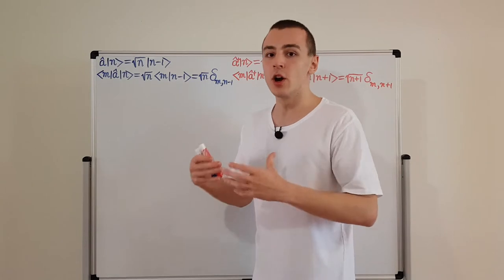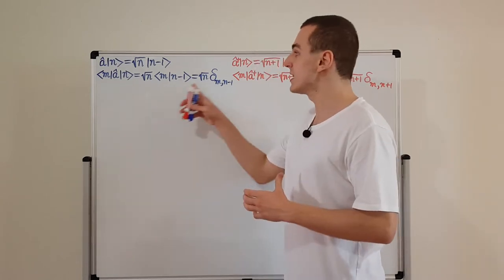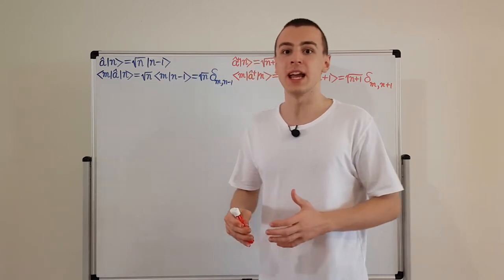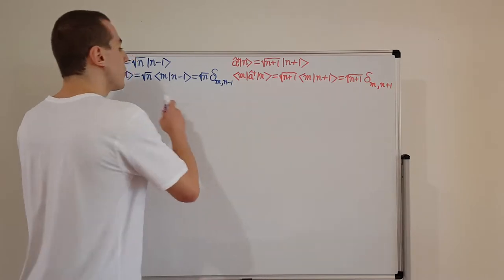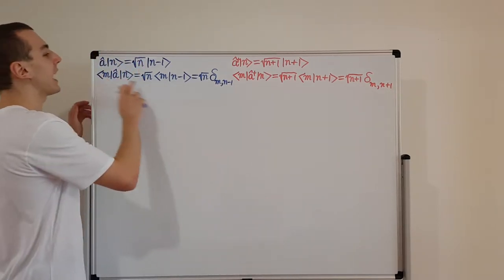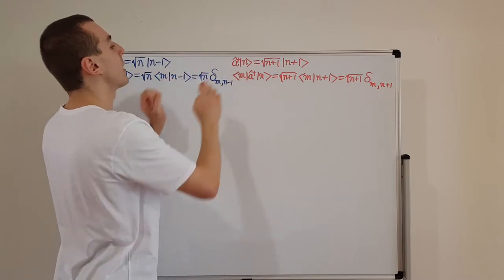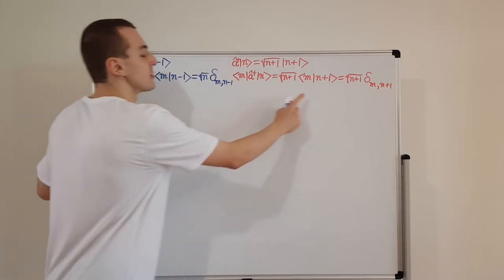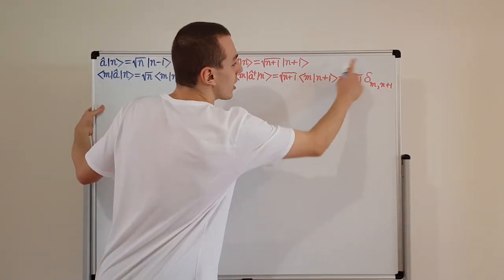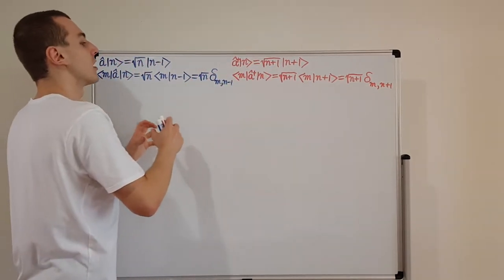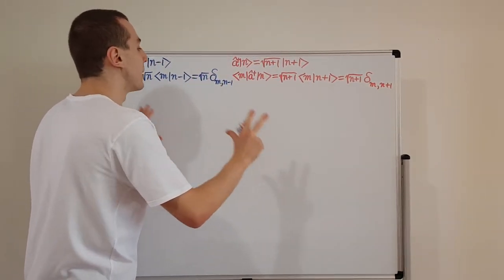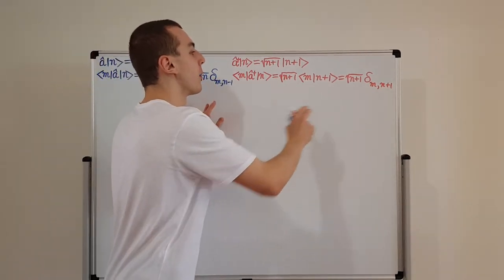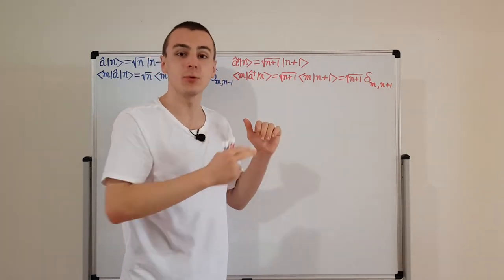Let's build on the relationships derived in the previous video for the ladder operators and find some relationships for the position and momentum operators. I expressed both the position and momentum operators in terms of a and a-dagger — the lowering and raising operators respectively. In the previous video, I derived these relationships in terms of the Kronecker delta, which are short-form package notations for the matrix representation in the energy eigenbasis. These tell us that these are not diagonal matrices but off-diagonal matrices.